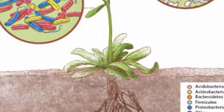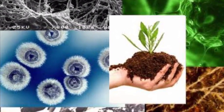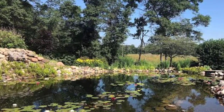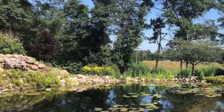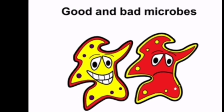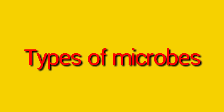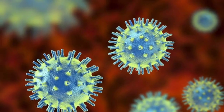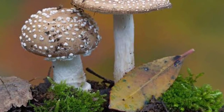Microbes are found everywhere on the earth. They are present on our skin, on plants, in soil, in water, and even in air. Some microbes are useful to us while some others are very harmful. Types of microbes: microbes are grouped as bacteria, viruses, protozoa, and fungi.